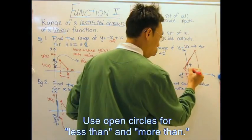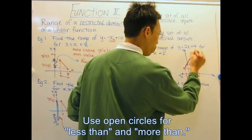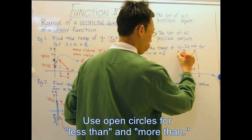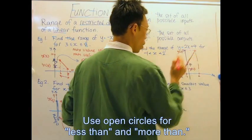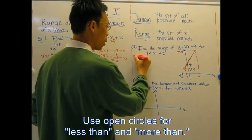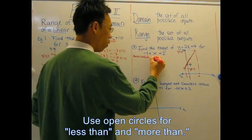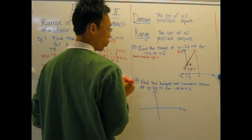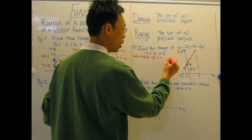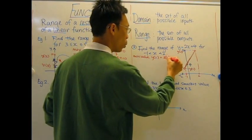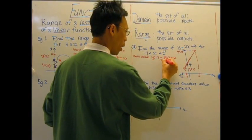And this is y of negative 1. And here is y of 2. So here it's easy to see the maximum value. The maximum value here is y of 2, and this case is 2 times 2 plus 4 or 8.